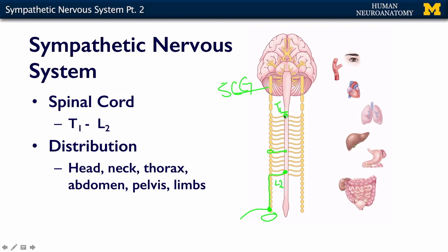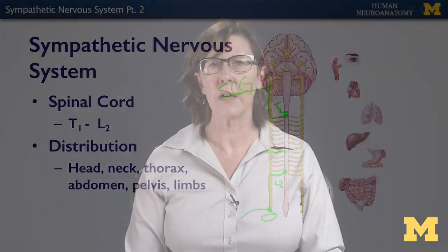From somewhere like T1, a neuron could go all the way into the chain and travel all the way up and synapse in the superior cervical ganglia. The distribution of the sympathetic chain goes beyond the distribution of the intermediolateral cell column because these axons can travel within the chain up or down a level or two, or maybe even many levels, to get to a ganglion that will reach a more distal target.